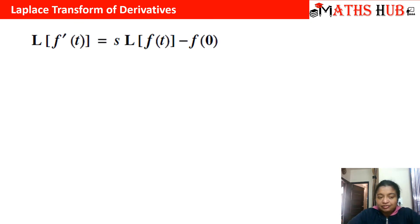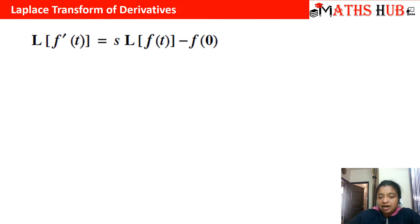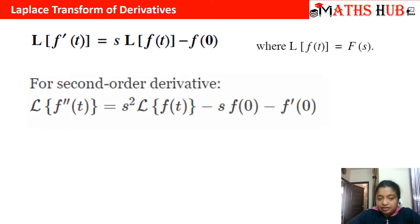The first derivative formula says that Laplace of f'(t) is s times Laplace of f(t) minus f(0). Likewise, the second derivative formula says Laplace of f''(t) is s² times Laplace of f(t) minus s·f(0) minus f'(0).